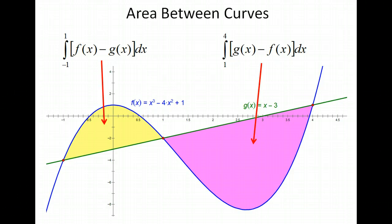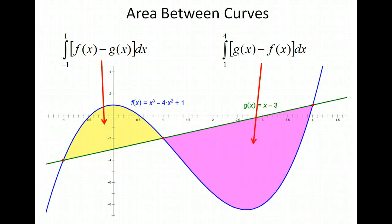That's going to help us set up our integrals. For the first interval, we're going to do f of x minus g of x — the greater minus the less — and integrate from negative 1 to 1. For the second interval, we're going to do the g of x function minus the f of x function, and go from 1 to 4.